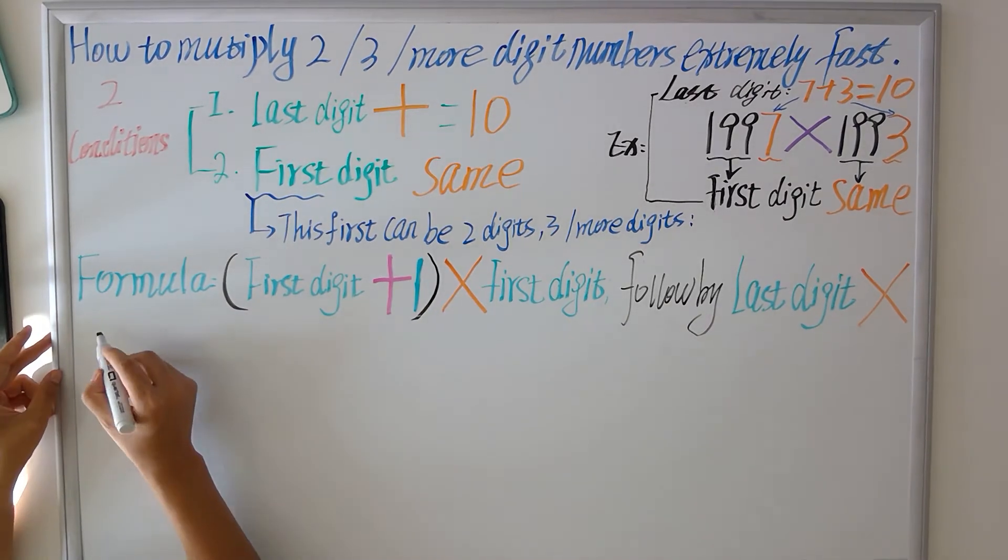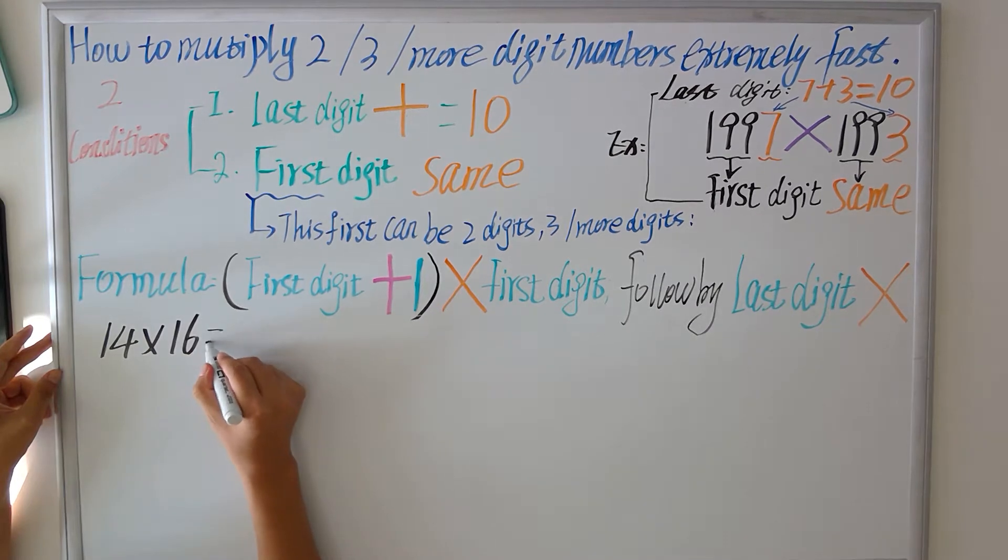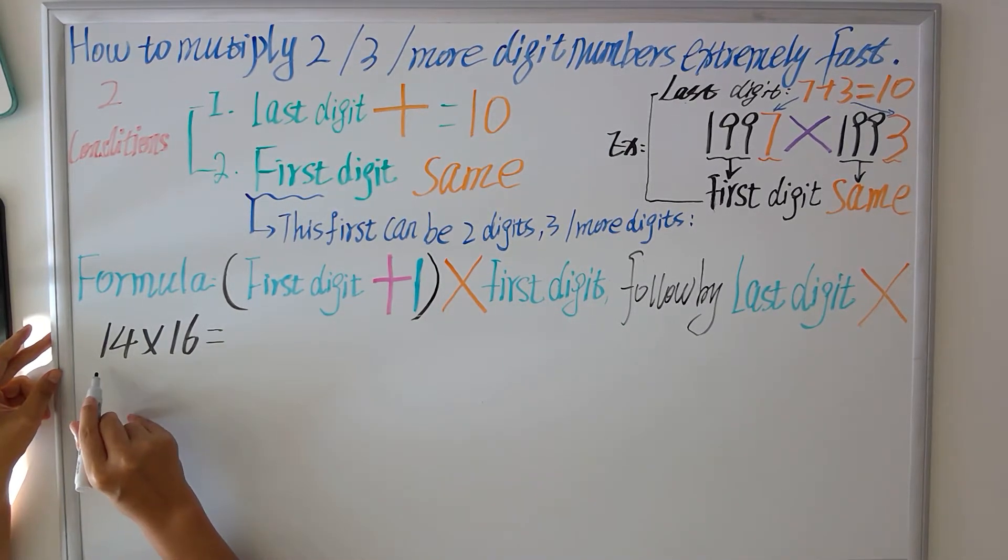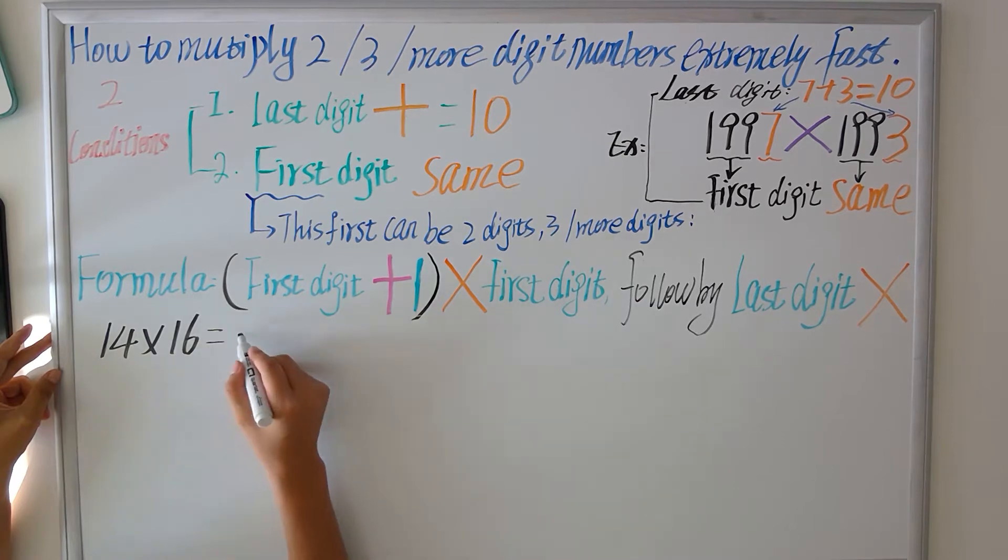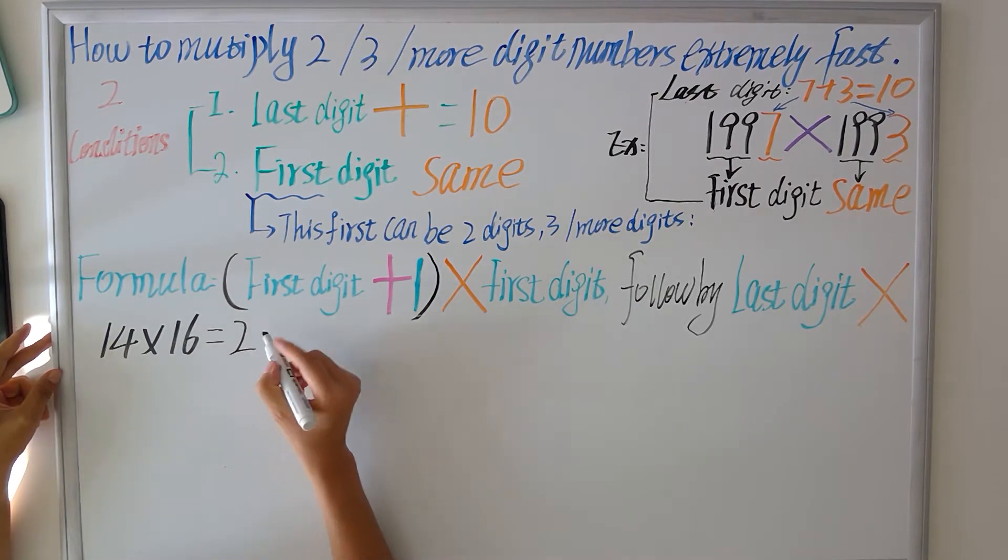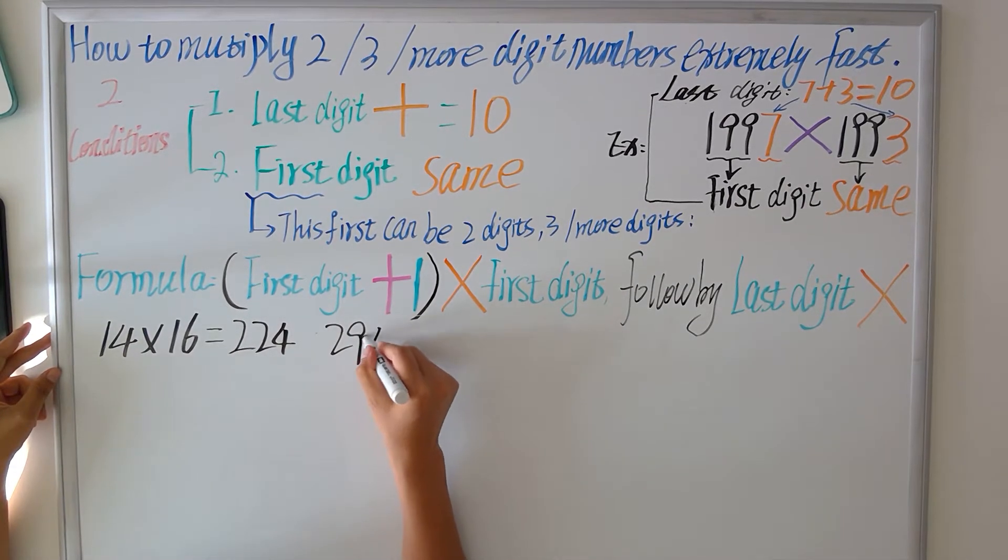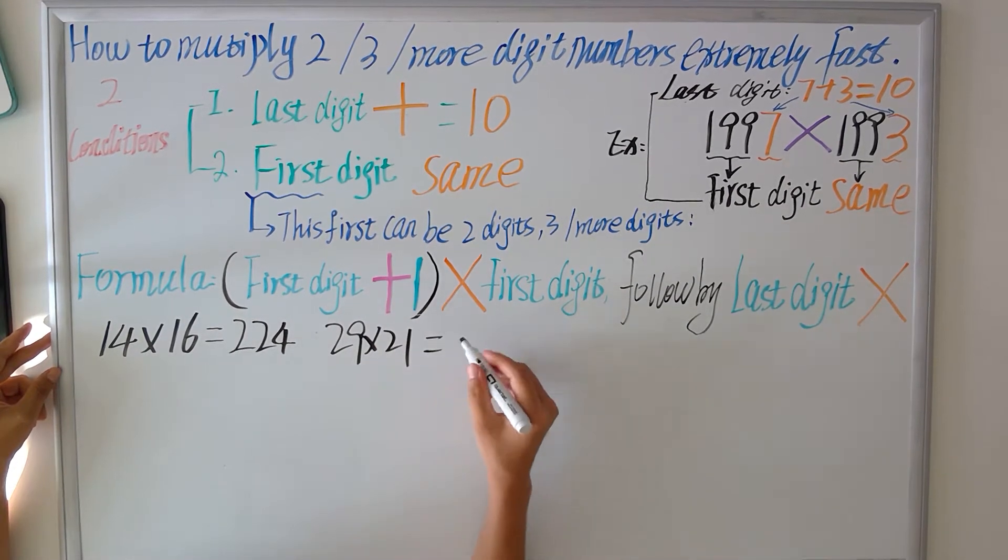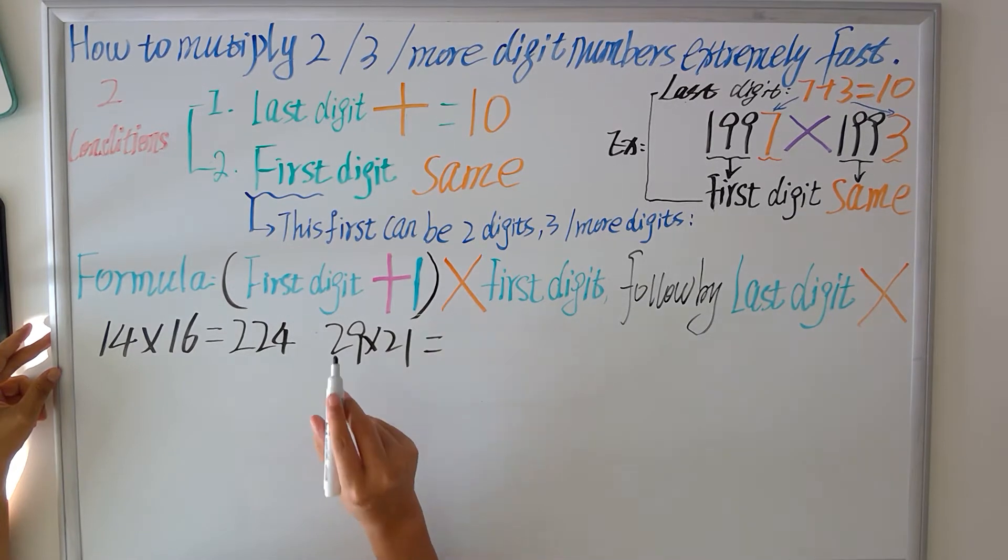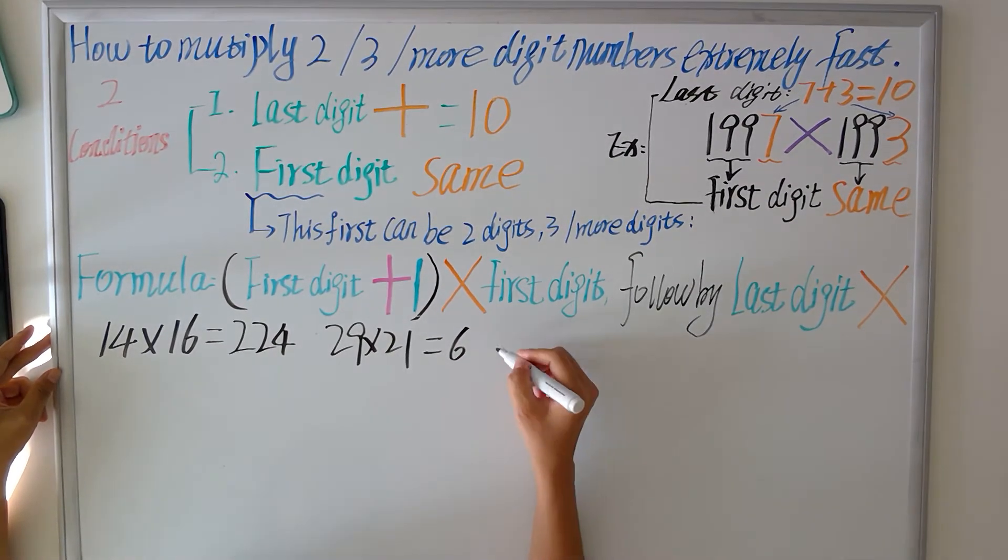For example, we use 14 multiplied by 16. First digit is 1 plus 1 is 2, multiplied by 1 is still 2. So last digit multiplied: 4 multiplied by 6 is 24. 2 plus 1 is 3, 3 multiplied by 2 is 6.